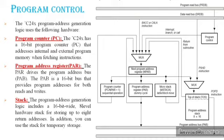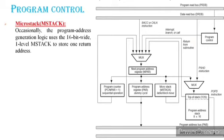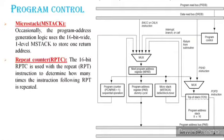When a subroutine or subprogram is called, the main program stops and the subroutine is executed. The return address location is saved in the stack. You can also use the stack for temporary storage. The program address generation also uses a 16-bit wide, one-level mstack to store one return address.